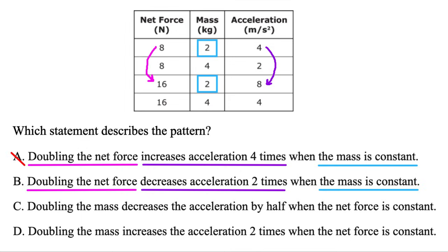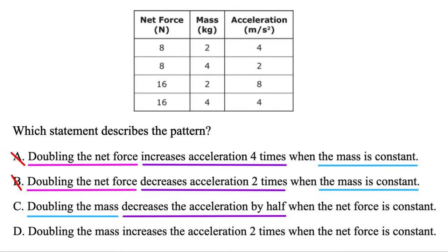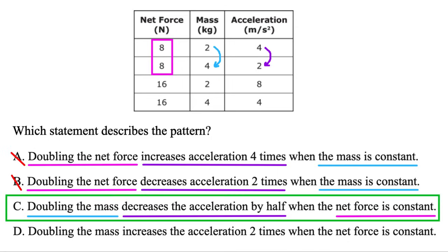The next option has basically the same information — we're going to decrease the acceleration two times. Going from here to here, we're definitely not decreasing acceleration, so B is not true. For option C, the net force is constant — let's highlight that — and then we double the mass, going from 2 to 4. Do we decrease the acceleration by half? We go from 4 to 2, and that cuts it in half. It does decrease, so C is the correct answer here.